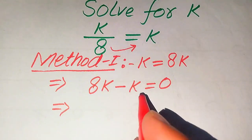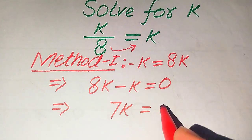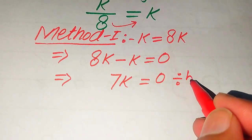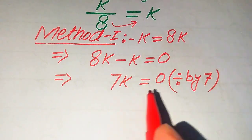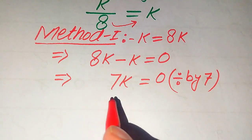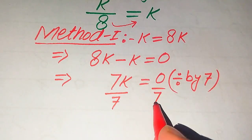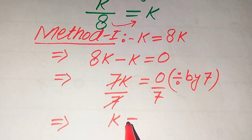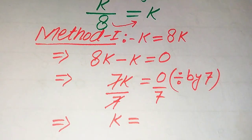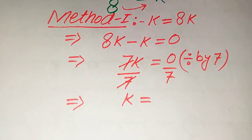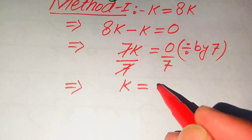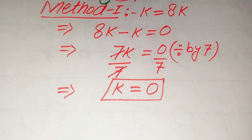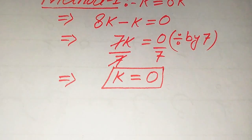Now, 8k minus k becomes 7k, and this whole equation is equals to 0. For the values of k, we need to divide both sides by 7 in order to remove the 7 from the left hand side. The 7 is cancelled out by the 7, and we get k equals 0 divided by 7. Since 0 divided by 7 is 0, we get only one value of k, that is k equals 0. This is the one root we get from the first method.